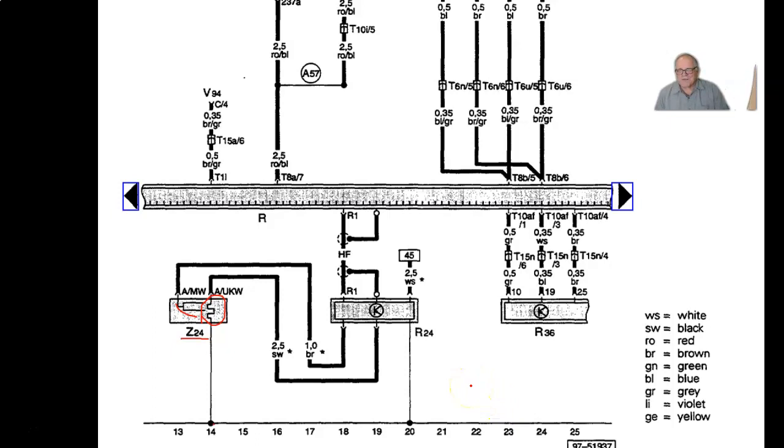People who can speak three languages are trilingual. People who can speak two languages are bilingual. The person who speaks one language is American. Unfortunately I'm American. I need a lot of help when it comes to the German words and this European way of doing these wiring diagrams.